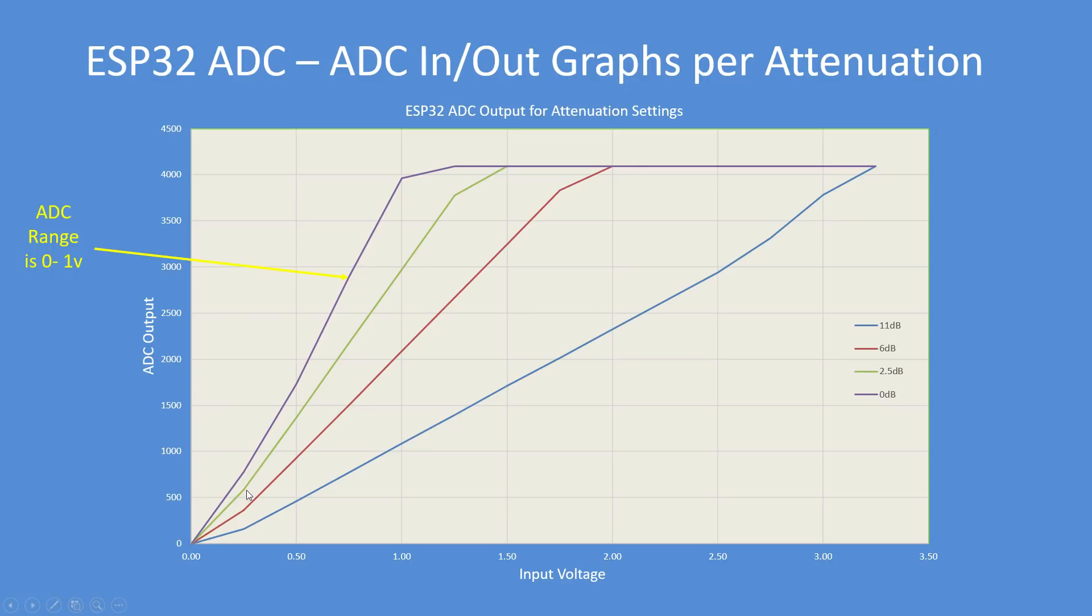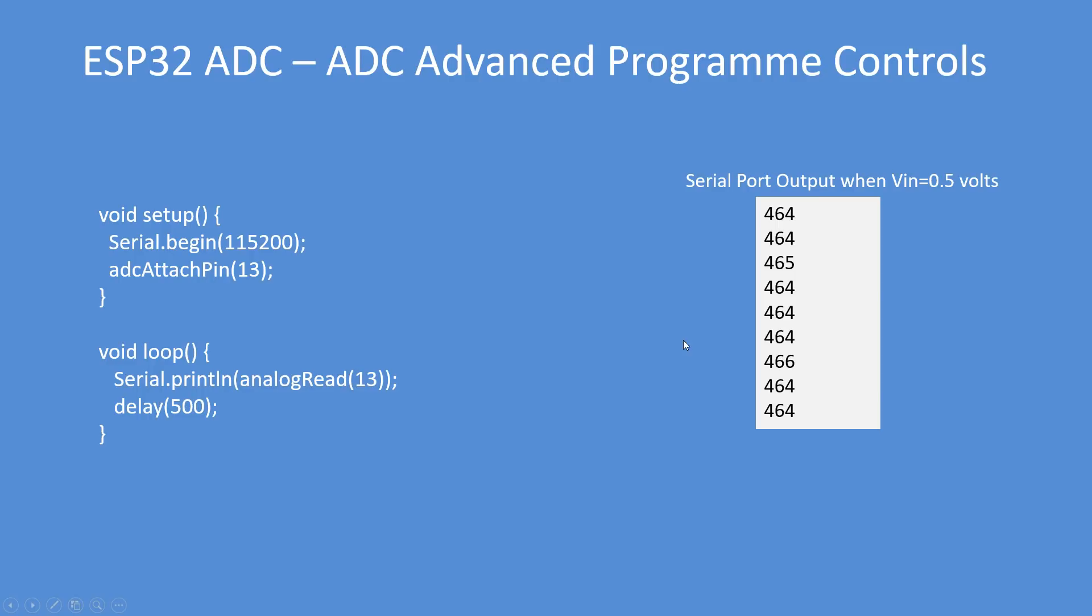So you always assume 0 to 1 volt is its default range, and you can vary the attenuation to get a wider range but with lower resolution. But noting that the 11 dB range, the default range, whilst giving a nice wide input range, is not quite linear.